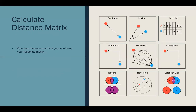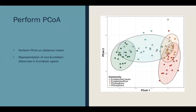The next step is to calculate the distance matrix of your choice for your response data — in our case, species data. The purpose of doing distance-based redundancy analysis is to pick a non- or semi-metric distance matrix, such as the Bray-Curtis dissimilarity matrix. Your next step is to perform a principal coordinate analysis (PCoA) on your response dissimilarity matrix. This is the key trick dbRDA uses, because a PCoA represents those non-Euclidean distances in a Euclidean space, which can then be input into your redundancy analysis.